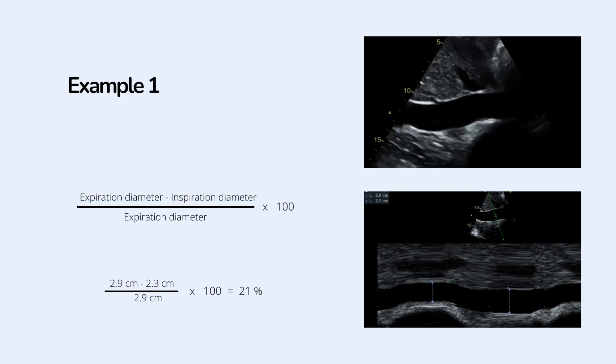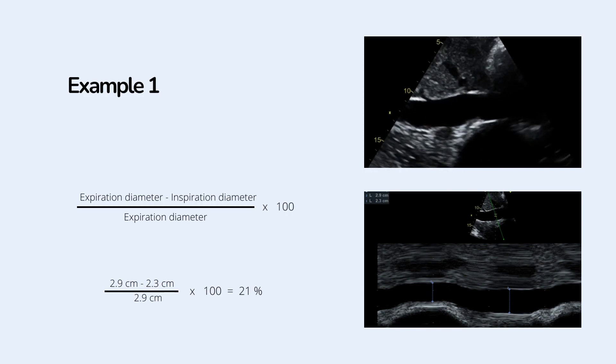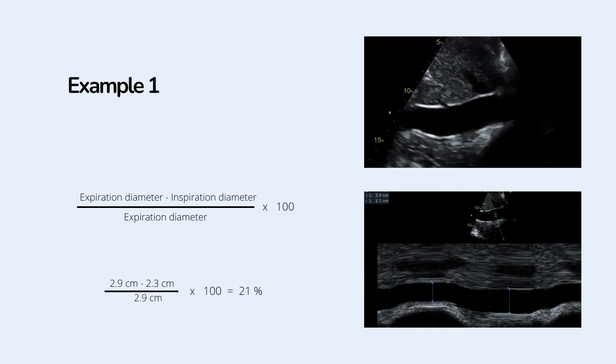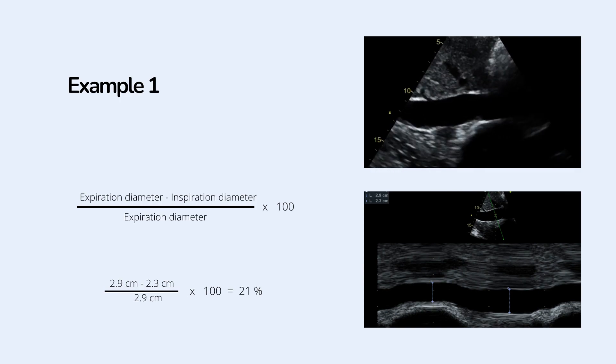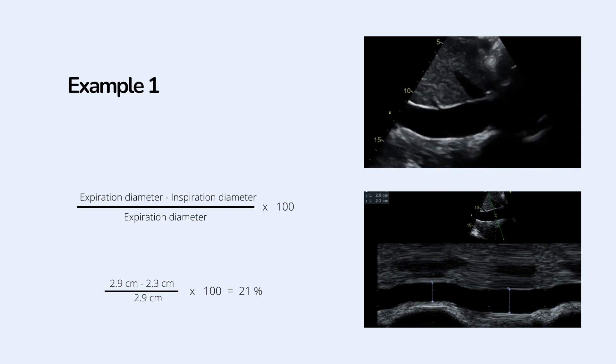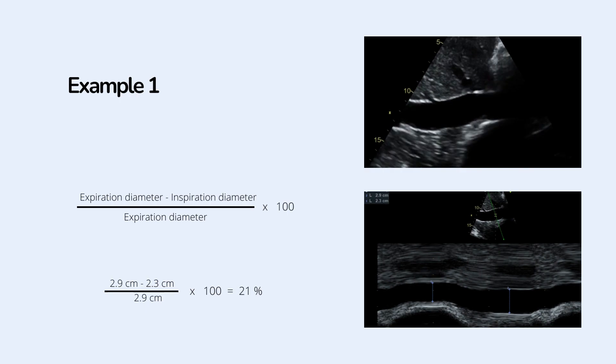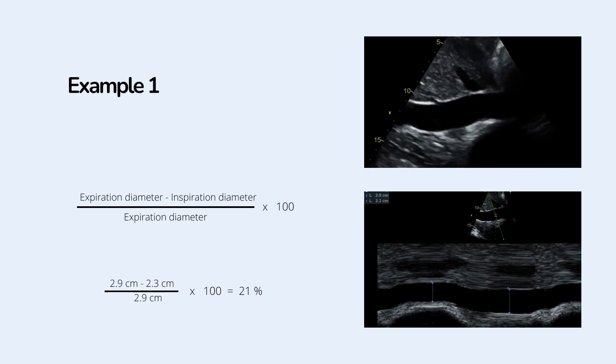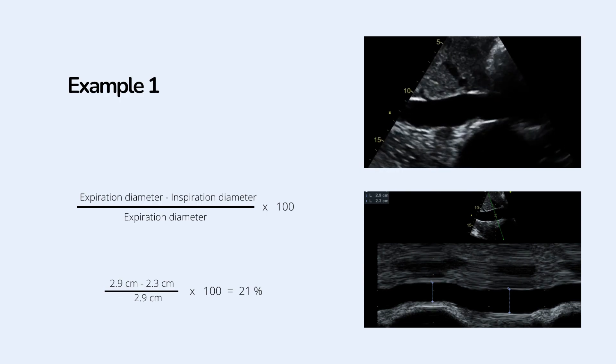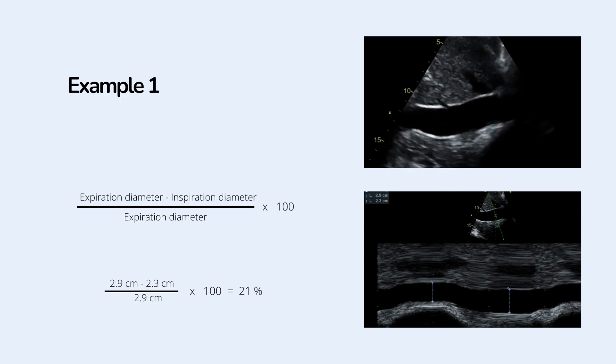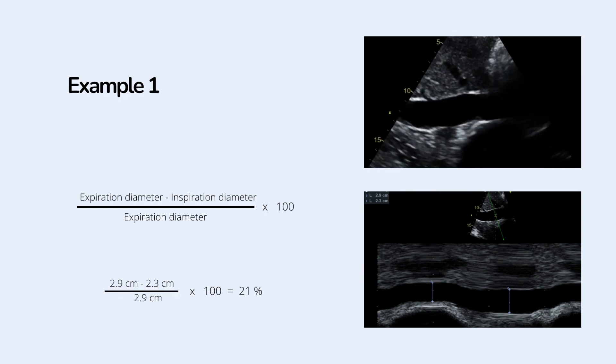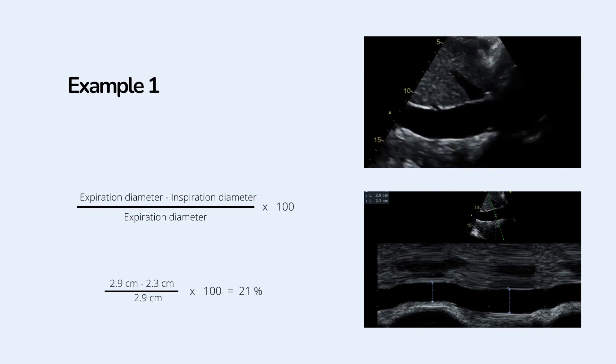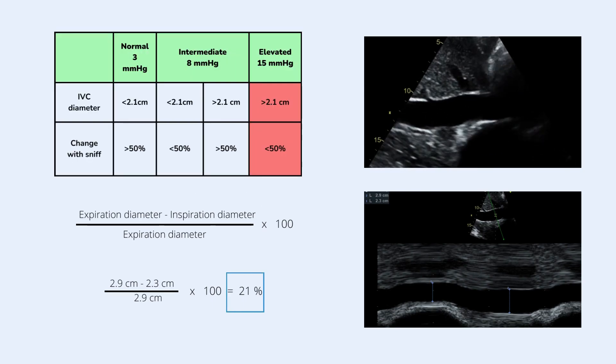For example, expiration diameter is 2.9 cm, minus the diameter on inspiration 2.3, divided by diameter on expiration 2.9, multiply by 100 equals 21%. Based on the table.